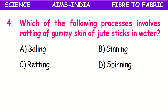Which of the following processes involves the rotting of the gummy skin of jute stalks in water? That process is called retting.